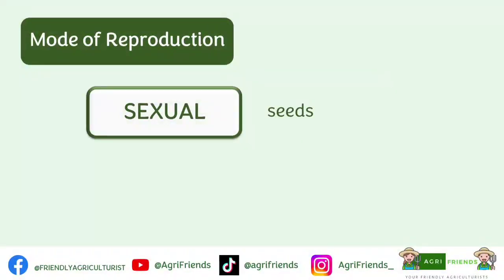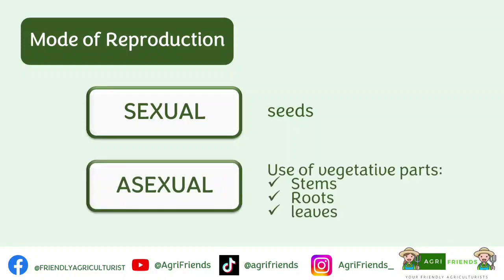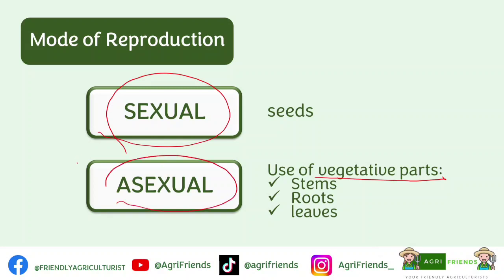Classification of crops based on mode of reproduction. First is sexual — these plants produce seeds or use seeds as the main means of reproduction. Asexual reproduction uses vegetative parts such as the stem, root, or leaves. Sexual reproduction involves meiosis and fertilization, while asexual reproduction does not involve meiosis and fertilization.